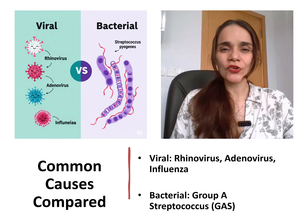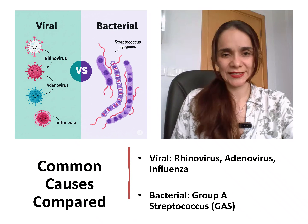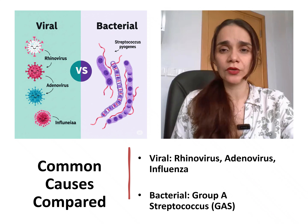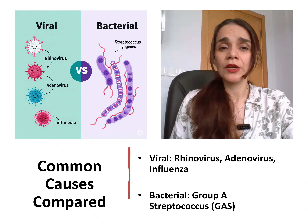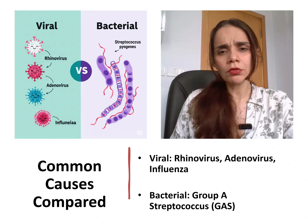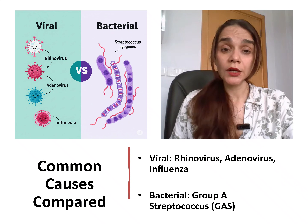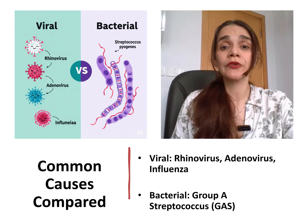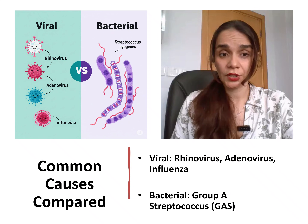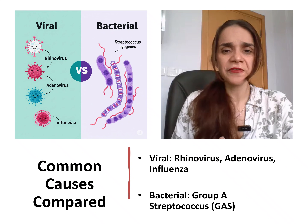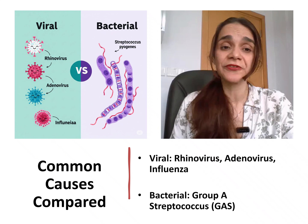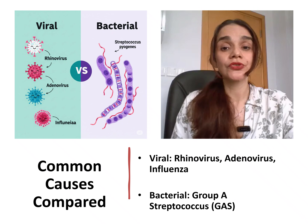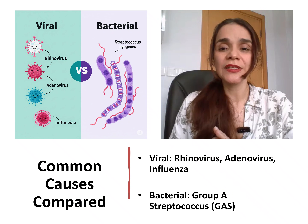Let's look at the organisms behind these infections. Viral pharyngitis is typically caused by rhinovirus, adenovirus, or influenza — viruses that also cause colds and flu. On the other hand, Group A Streptococcus is the bacterium responsible for strep throat. These two types of infection may feel similar at first, but they are clearly different in symptoms, diagnostic approach, and treatment. We will break these down next.